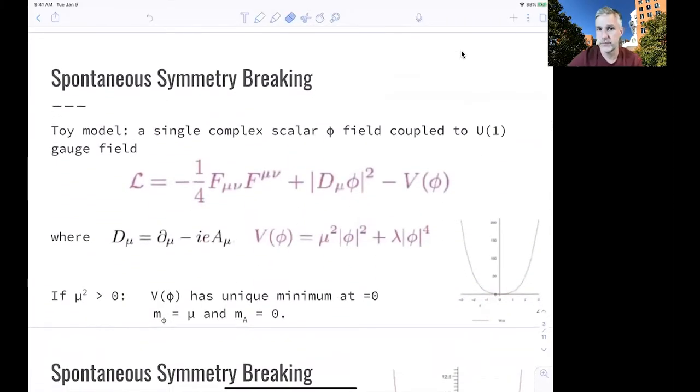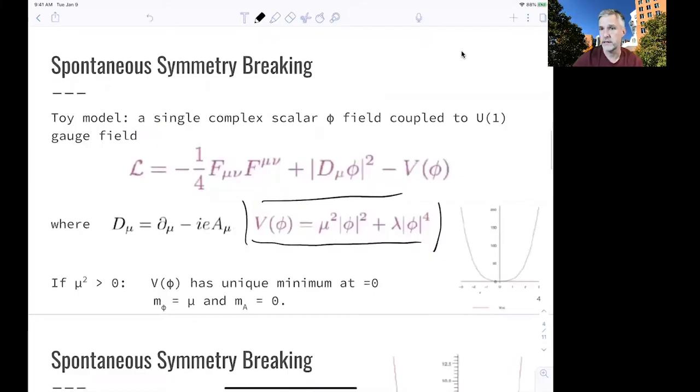Let's look at spontaneous symmetry breaking in a toy model first. So what we want to do here is just add a complex scalar field and the corresponding potential for this field. Potential is shown here. And this general potential can have many forms. So the first form would just be this parabola here. It's a solution where mu-squared, this term mu-squared, is greater than zero. In this case, there is this unique minimum. The minimum is here at zero. And because of that, the mass of this field would be equal to zero. And the mass of our gauge field would also be equal to zero.